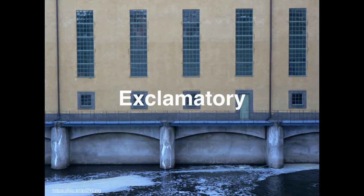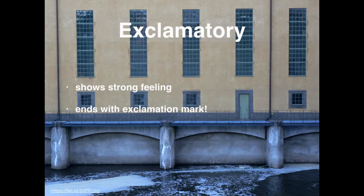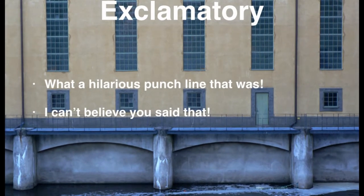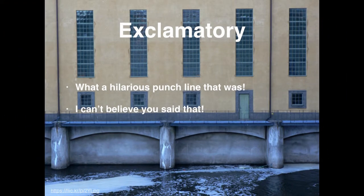Next we have the exclamatory sentence. Exclamatory sentences, or exclamations, show strong feeling and end with an exclamation mark. Did you notice the exclamation marks in this picture? Here are two examples. You would say, "What a hilarious punchline that was!" Your voice gives the impression that you're excited, but you can't do that in writing. That's why you add the exclamation point to clue your readers that you have some strong feelings about the topic of the sentence. You're shocked that he or she said something, so you say it with emotion — the exclamation point does that for you when you're writing.